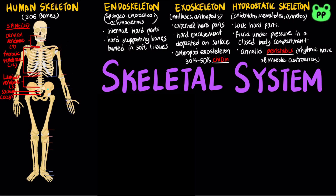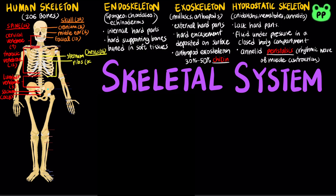The coccyx is the tailbone. The skull contains 29 bones, including 8 cranial bones, 6 middle ear bones, and 15 facial bones. The chest contains 26 bones, including the sternum or breastbone, and 12 pairs of ribs.